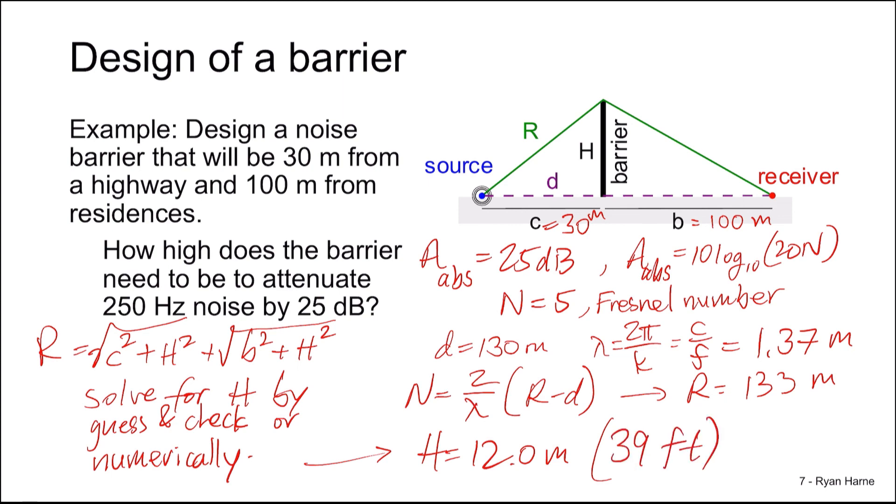So this tells us, in order to attenuate by 25 decibels, low frequency noise, 250 hertz, which is very common for tire noise, we need a 40 foot barrier. This demonstrates how difficult it is as well to attenuate low frequency noise.